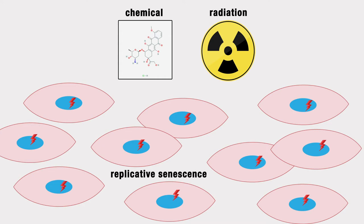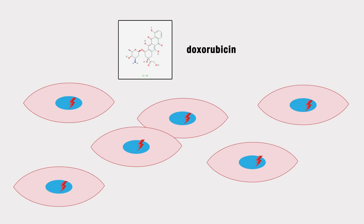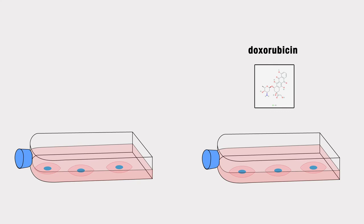For our experiment, we choose to use a chemical called doxorubicin, which is commonly used in the field, to induce senescence in our fibroblasts. It's important to split the population of fibroblasts and induce senescence in one group while another group serves as the control, to make sure any differences in the two populations are actually due to the treatment and not other random variables.